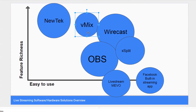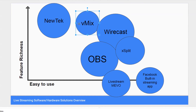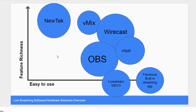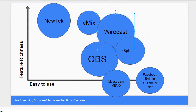A really popular option for churches is vMix. It's extremely feature-rich, and once you learn it, it's quite easy to use. However, it's Windows only, so Mac users are ruled out. A lot of people build custom Windows PCs, or use the Intel NUC Skull Canyon — an i7 PC for roughly $1,300 fully maxed out — to run vMix. It's one of my favorite softwares, but it is harder to learn than XSplit, OBS, or Wirecast.